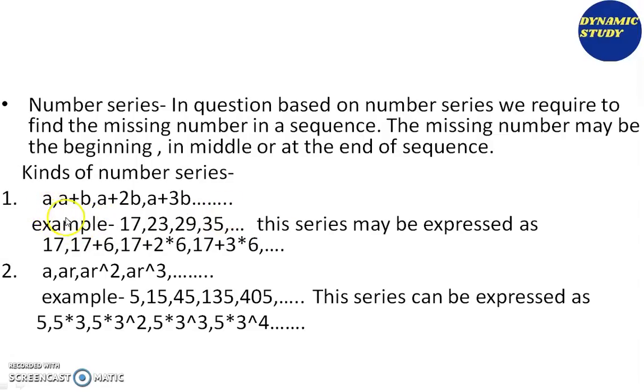In this pattern, there's a number 'a', and the same number is being added repeatedly—so the series continues with that number doubled, tripled, four times, five times. For example: 17, 23, 29, 35. This series may be expressed as 17, 17+6, 17+12 (that is 2×6), 17+18 (that is 3×6), and the series continues like this. If we need to calculate the next number, it would be 17+24.